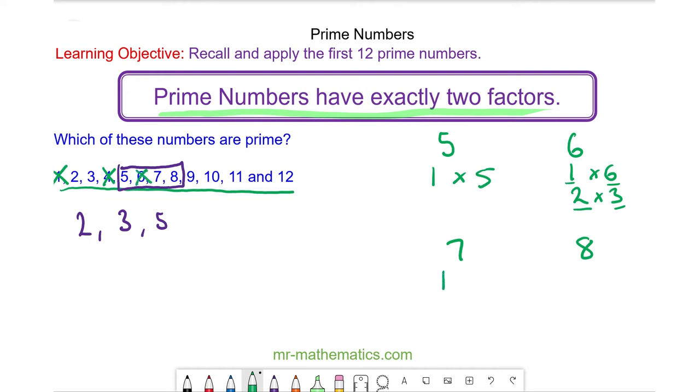The number seven has one and seven, so seven is prime. The factors of number eight are one, eight, two, and four. This has four factors, so eight is not prime.